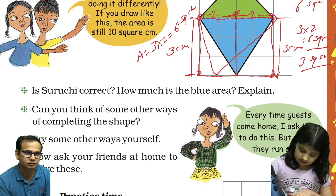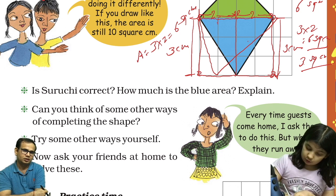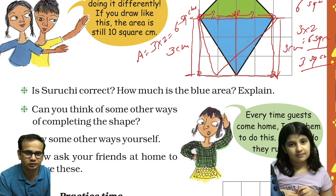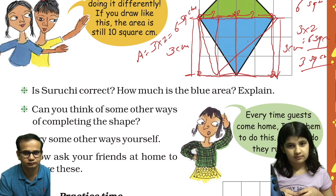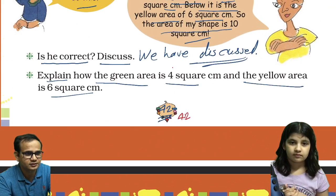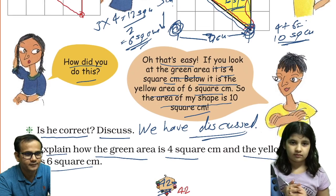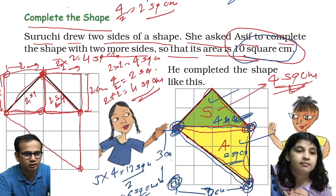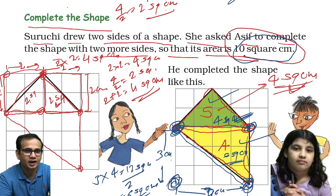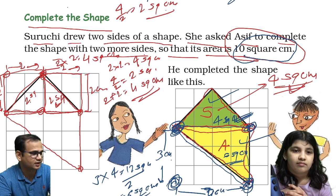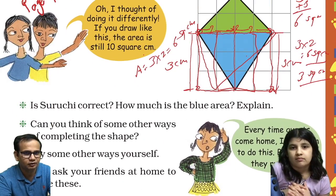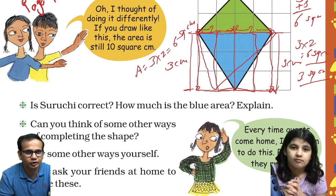This is also correct. So what Avisha is telling — she wants to draw like this. But the question was different, Avisha. The question asks you to complete the shape with two more sides. You have to use only two more sides.